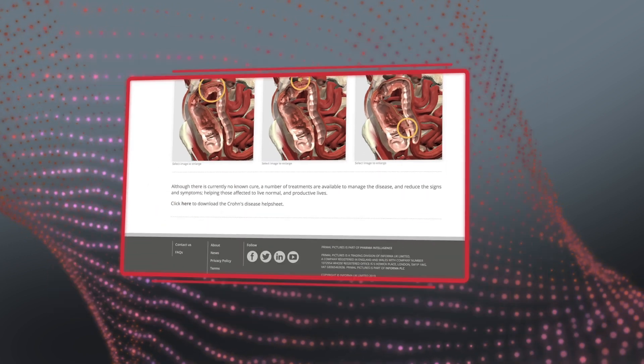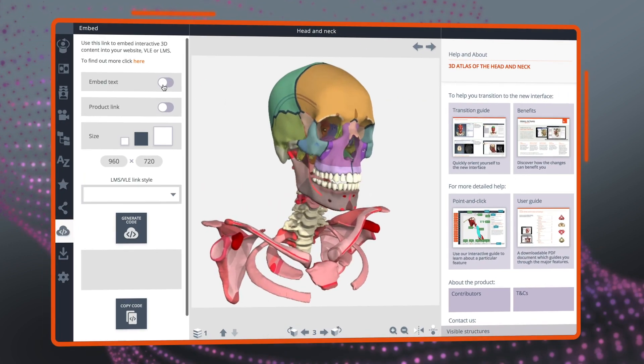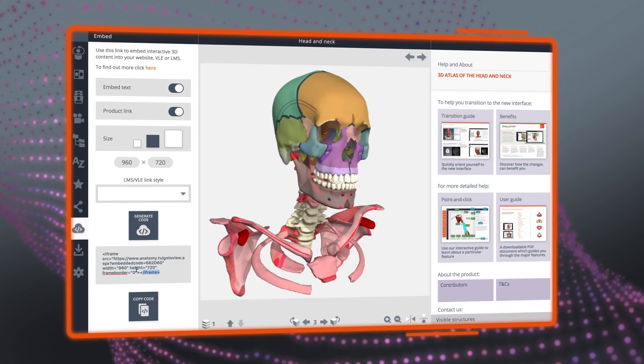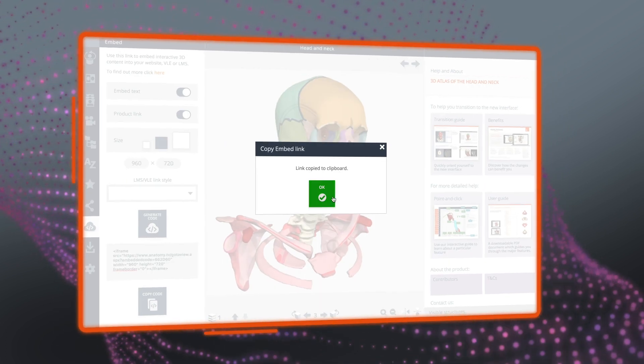Using the embeddable viewer is simple. Click on the embed button to create a code snippet that can be inserted into your institution's web page or VLE.